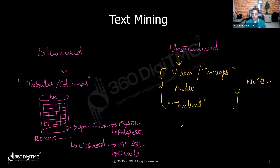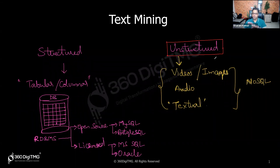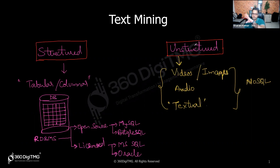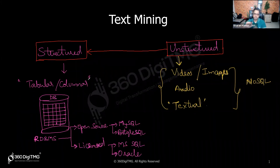To apply any machine learning algorithm on unstructured data, you cannot directly apply it. You need to convert unstructured data into structured format first. Only then can you apply machine learning algorithms or statistical techniques to analyze the data further.